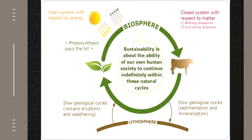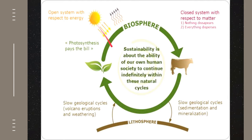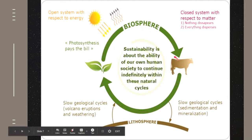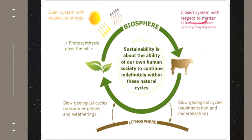Here is another diagram that explains the duality of the Earth system. In terms of energy, we are considered an open system because we receive energy from the sun in the form of sun rays and UV rays. Our organisms — plants and animals — use that energy through photosynthesis and cellular respiration. We also radiate heat back into space. So in terms of energy, we are considered an open system: we receive, we process, we utilize, we recycle, and then we give it back to outer space.